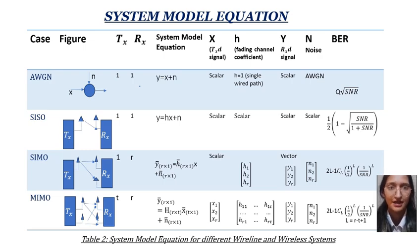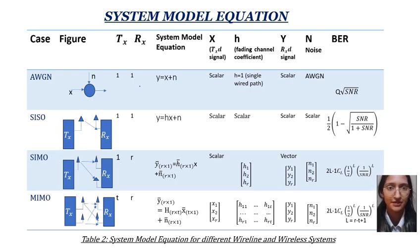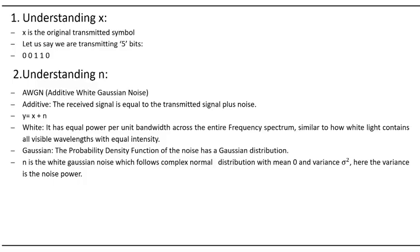In the last case of MIMO — multiple input, multiple output — we have multiple antennas at the transmitter and multiple antennas at the receiver. Let's say we have t antennas at the transmitter and r antennas at the receiver. The system model equation is y = Hx + n, where y is a vector of dimension r×1, H is a matrix of dimension r×t, and x is a vector of dimension t×1.